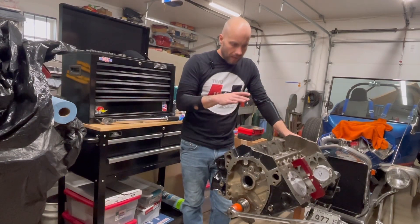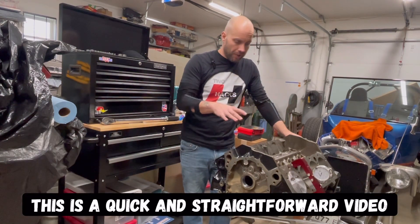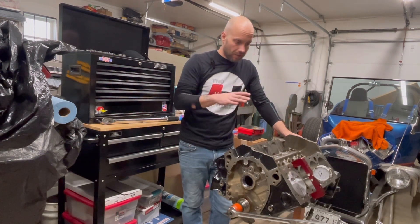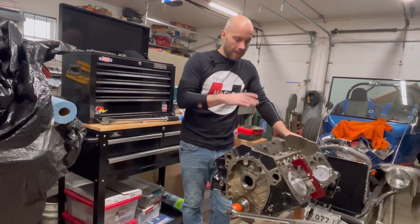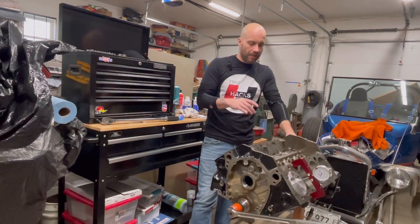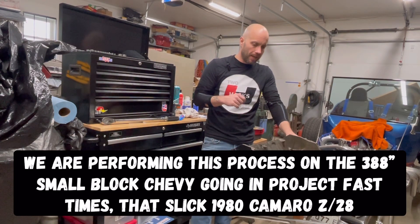Jeff from 2HacksGarage. Well, I tell you what guys, before we get started on assembling this engine further, as you saw, we have the crank and the pistons in, everything's torqued down. We're actually going to check deck height. Now mind you, this is that 388 cubic inch small block Chevy I'm building for that 1980 Camaro of my friend Todd's. We call it Project Fast Times.